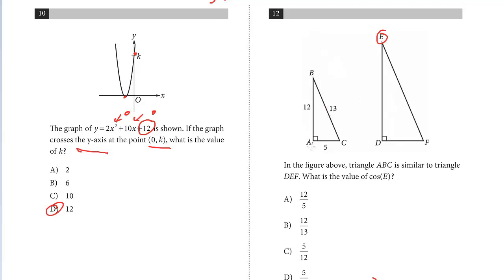You should recognize right away—they don't give us any of the sides of DEF. But because it's similar to ABC, the cosine of E is going to be the cosine of B, because of similar triangles. This is one trig question you'll see.